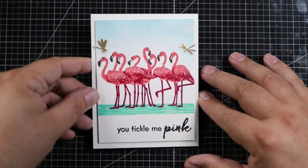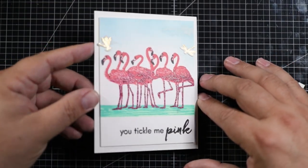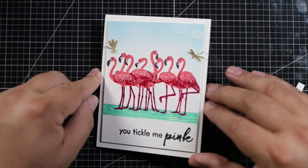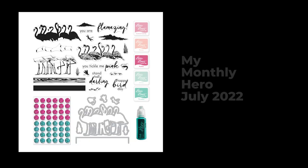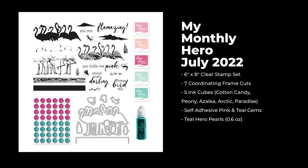Hey there, let's make this fantastic little pink flamingo card with goodies from the My Monthly Hero July 2022 card kit.